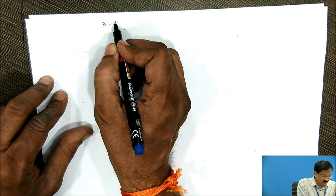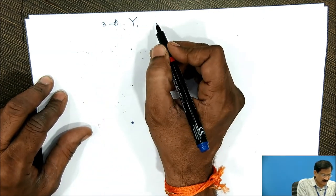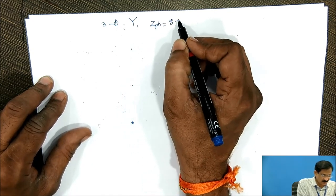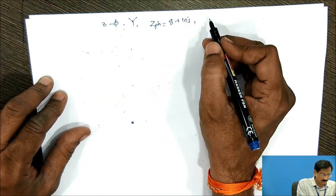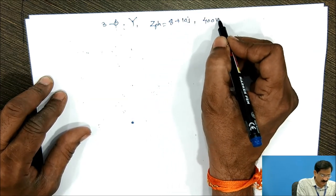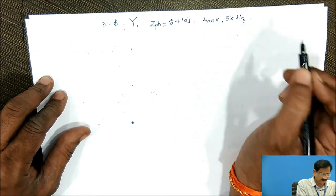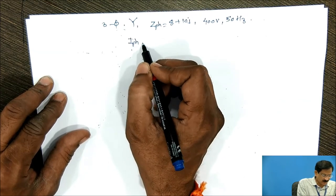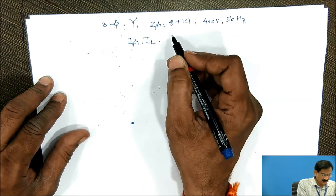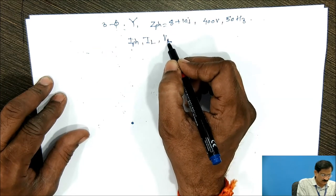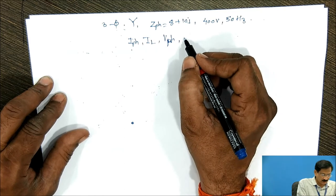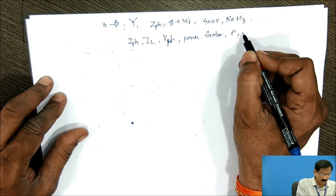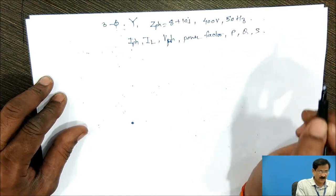A three-phase star connected balanced load having each impedance Zph equals to 8 plus j10, and then supplied with a voltage 400V, 50 Hz supply. It is required to find out Iph phase current, line current, phase voltage, power factor, then active power, reactive power, and apparent power.